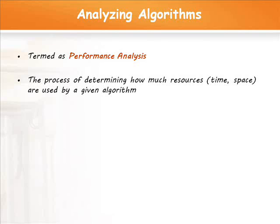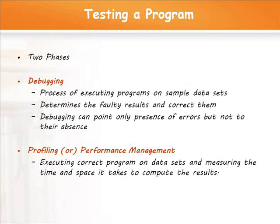It majorly deals with the calculations of time complexities and space complexity of the algorithm. When an algorithm is implemented as a program using a programming language, how can I test it? The testing can be done in two phases, debugging or profiling. Debugging is the process of executing programs on sample datasets. It determines whether faulty results occur, and if so, we can correct them. The drawback of debugging is that it can point only the presence of errors, but not their absence.